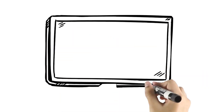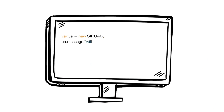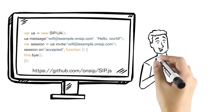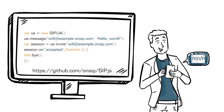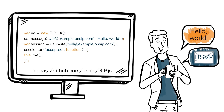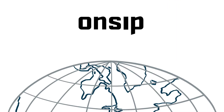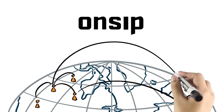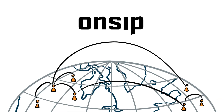OnSIP offers a simple, open-sourced JavaScript library, SIP.js, for you to send these invitations and messages from your app. And OnSIP offers a signaling network to route these messages amongst peers.